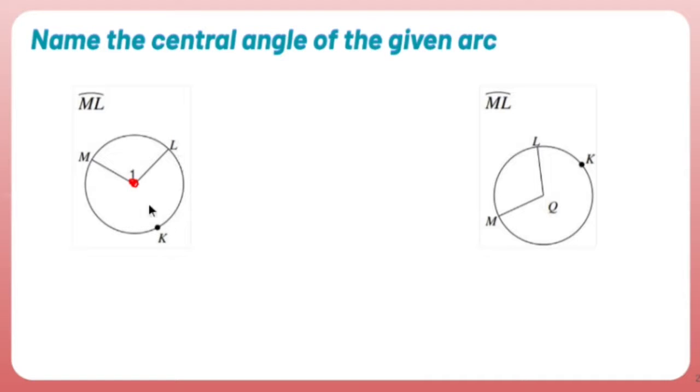These are arcs. Now I'm given arc ML. So it's basically saying I want to go straight from M to L. Should I go this way? No, because otherwise I would have snuck a K in there. This is just ML.